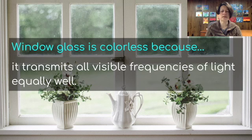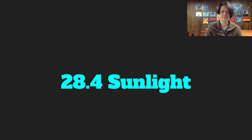Window glass is colorless because it transmits all visible frequencies of light equally well, so it lets through everything. And finally, sunlight.